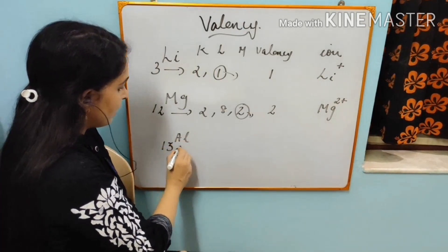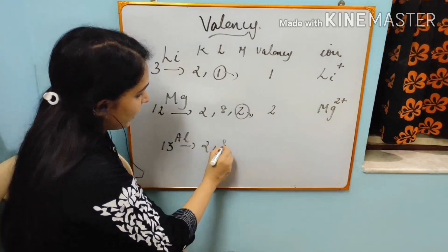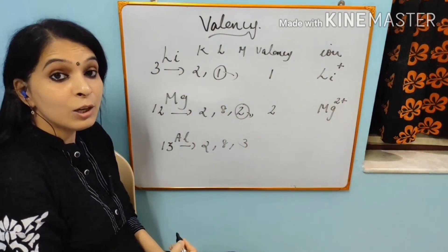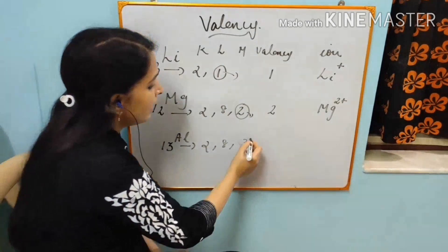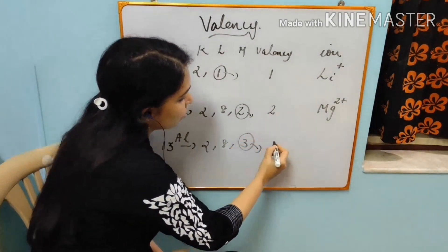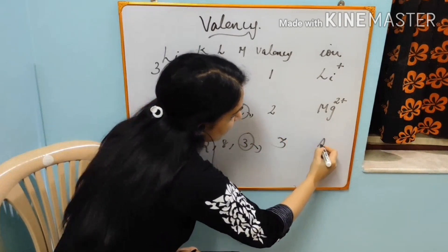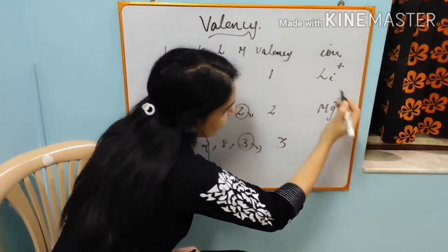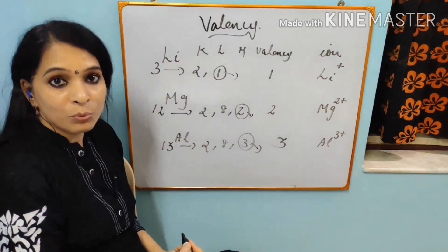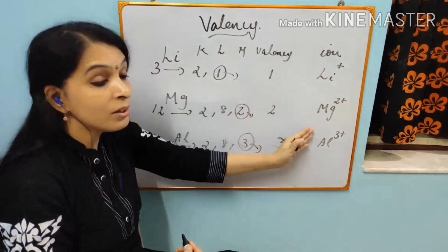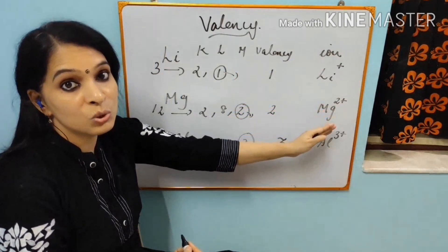Next is Aluminium. Atomic number is 13. So it is 2, 8, 3 electronic configuration. Three electrons in the outermost shell. It will give out these three electrons. So valency is three. And it will become an ion, Al3+. This is how we can study about metals and its valency and what ion it will eventually turn to.